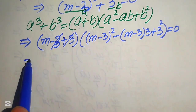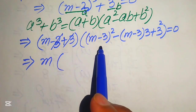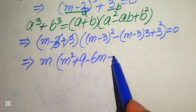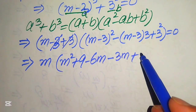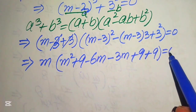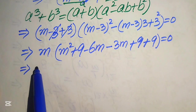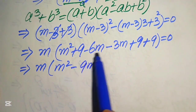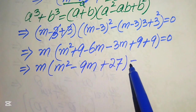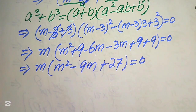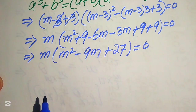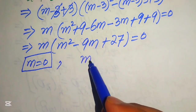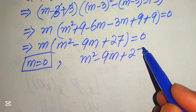Expanding: m times [m² + 9 − 6m − 3m + 9 + 9] = 0. Combining like terms: −6m − 3m = −9m, and 9 + 9 + 9 = 27, giving m(m² − 9m + 27) = 0. We split into two cases: Case 1 gives m = 0, which is the fourth real root of the given equation; Case 2 gives the quadratic m² − 9m + 27 = 0.